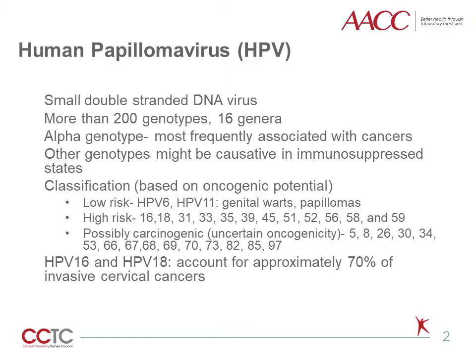Of these, the alpha genotype is the most frequently associated with cancers, although some of the other genotypes may be oncogenic in immunosuppressed states such as HIV infection and post-transplant states. Based on their oncogenic potential, human papillomavirus have been classified into low-risk and high-risk with a third category of possibly carcinogenic. The low-risk HPV includes type 6 and 11, while the high-risk includes at least 12 different types. Of these, HPV type 16 and 18 account for approximately 70% of invasive cervical cancers.